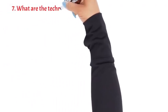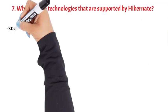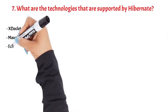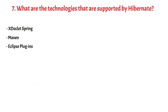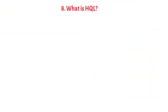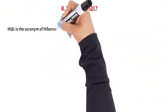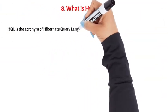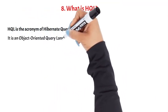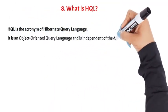Question 7: What are the technologies supported by Hibernate? XDoclet, Spring, Maven, Eclipse plugins, J2EE. Question 8: What is HQL? HQL is the acronym for Hibernate Query Language. It is an object-oriented query language and is independent of the database.